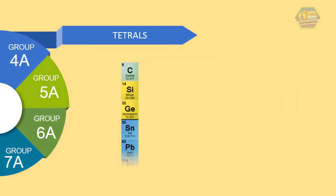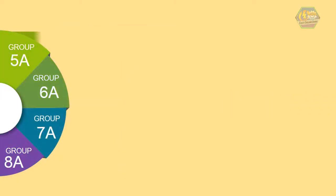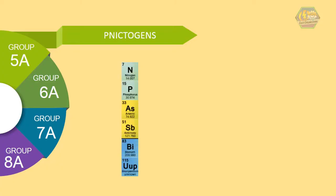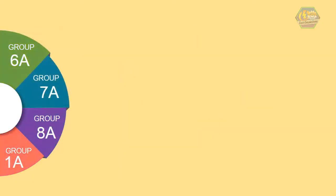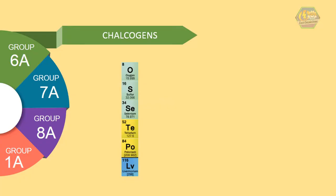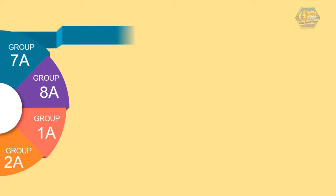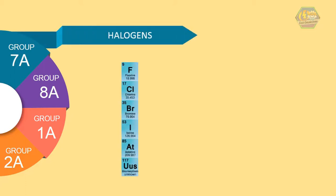Group 4A is called pnictogens, which comes from the Greek word that refers to the choking property of nitrogen. Group 6A is called chalcogens, which comes from the Greek word 'chalcos' that means ore formers. Group 7A is called halogens, which comes from a Greek word meaning salt producing.